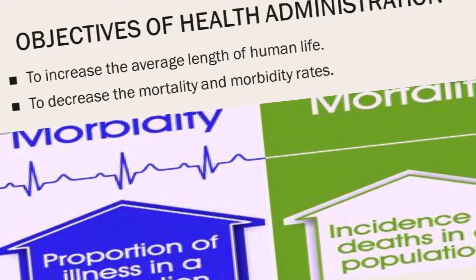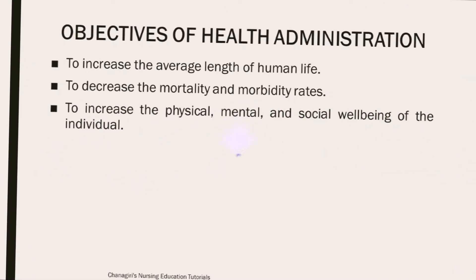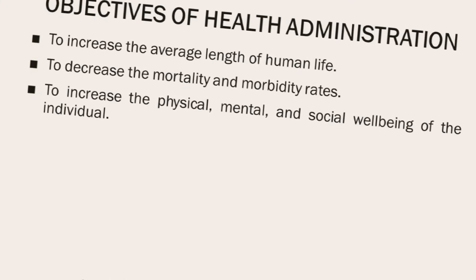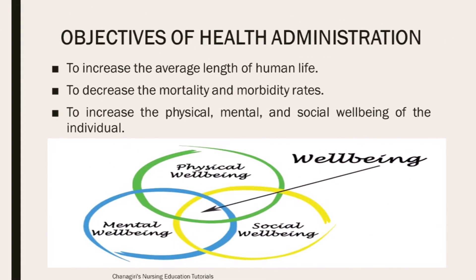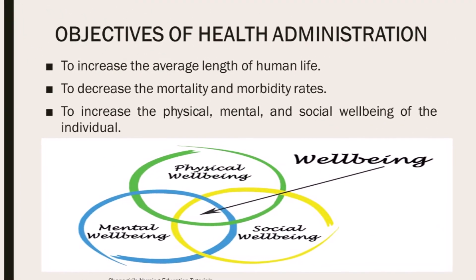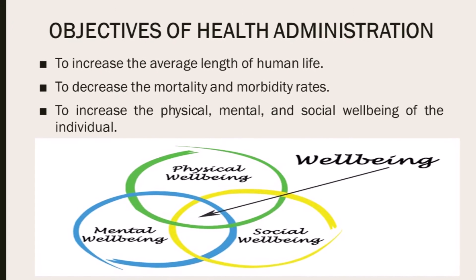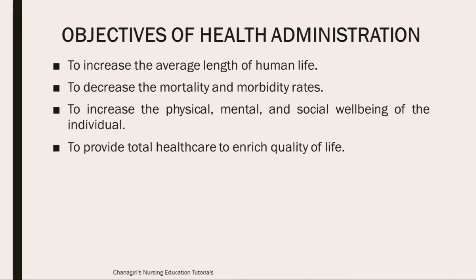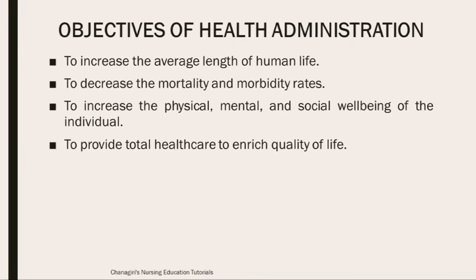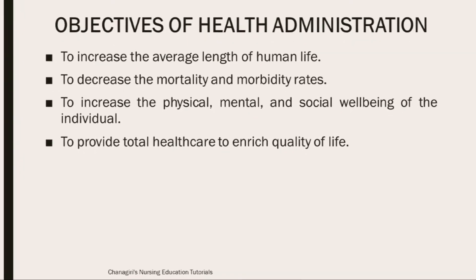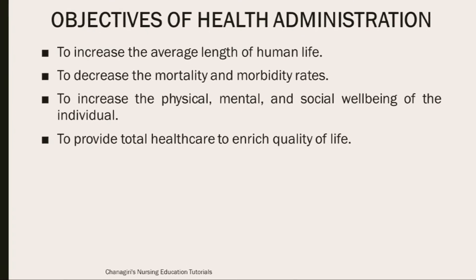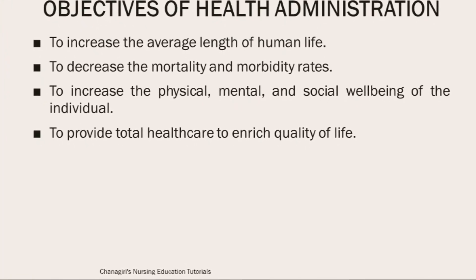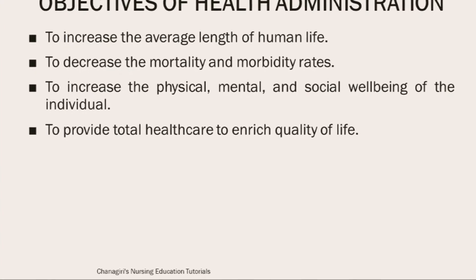The next objective is to increase the physical, mental and social well-being of the individual. Here a holistic approach should be made to achieve physical, mental, social and spiritual well-being. The next objective is to provide total healthcare to enrich quality of life — the government should make provision of total services: promotive, preventive, curative and rehabilitative.